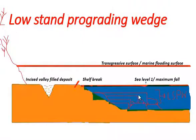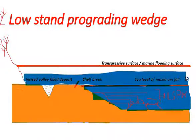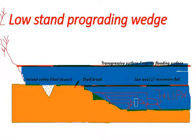Low stand prograding wedge forms when sea level gradually rises from maximum fall. It forms after the deposition of submarine fans.